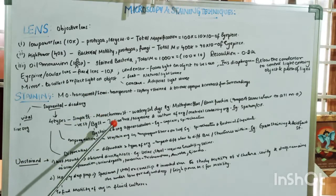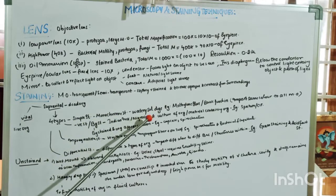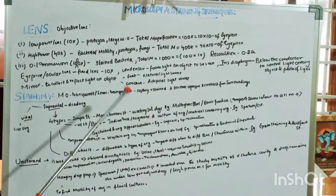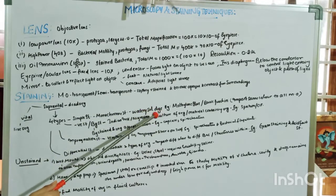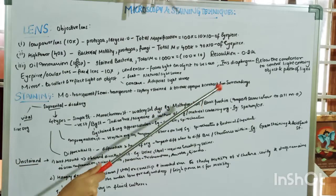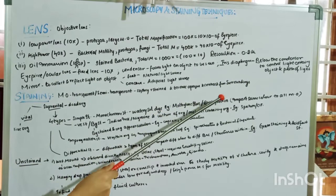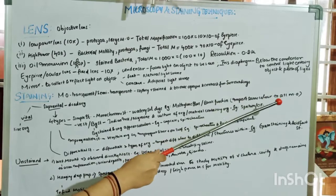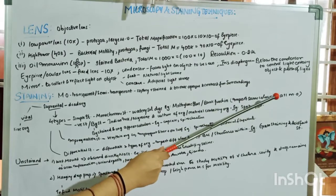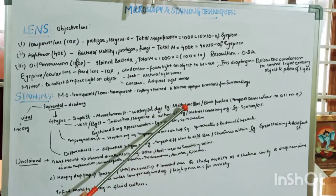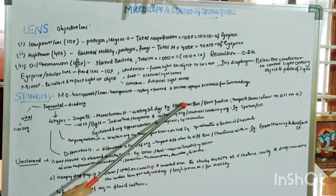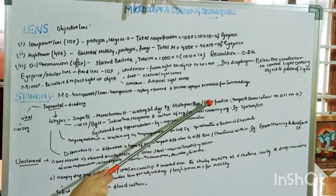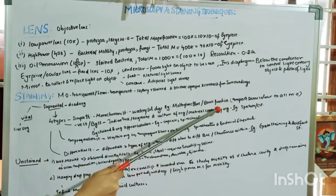Simple staining, also called monochrome staining, uses a single watery dye solution. Examples include methylene blue and basic fuchsin. Methylene blue imparts only blue color to all structures, while basic fuchsin gives a reddish to pinkish color to all substances.